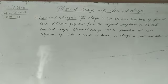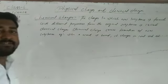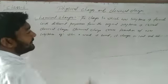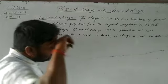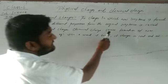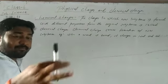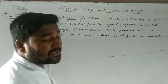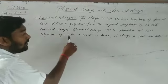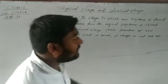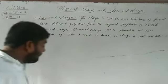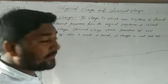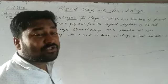Chemical changes are changes in which a new substance is formed with different properties from the original substance. For example, when wood burns it changes into coal — the properties of the wood are completely changed.